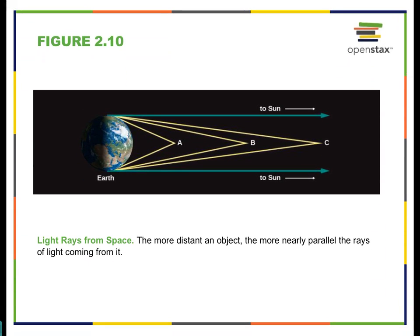When we talk about light coming from the Sun, we make the assumption that it arrives in straight, parallel rays. We can do this because the distance is so great. Unlike a lamp held close to a wall where you can see light coming out at angles, the Sun is so far away that the light is effectively arriving in a straight, parallel path.